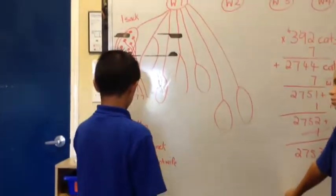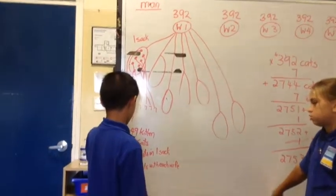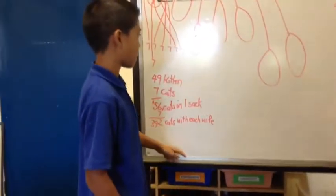And seven cats, so that's a total of 56 cats in one sack. Times seven is 392 cats with each wife.